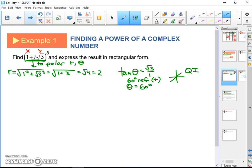So all we've done is we've taken this complex number in rectangular form and changed it to a complex number in polar form: 2 cis 60. Now we want to take that to the 8th power. And that's what De Moivre's is going to do.